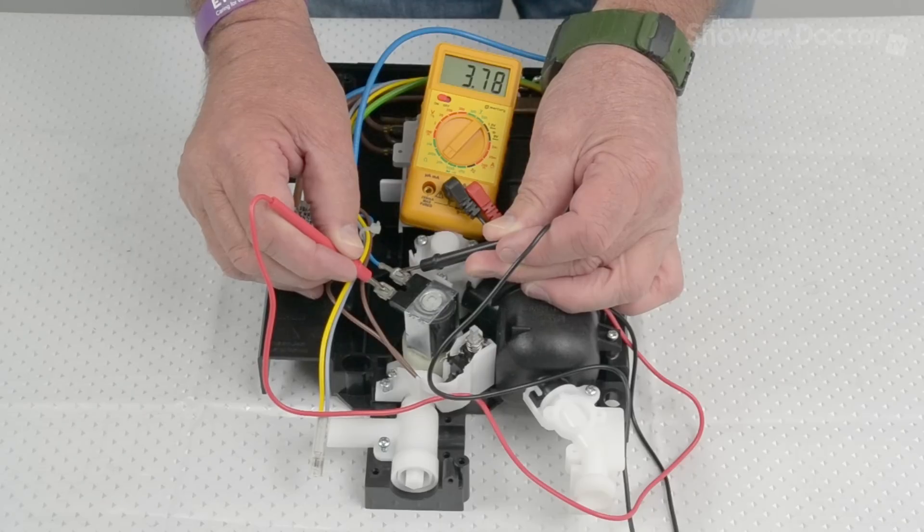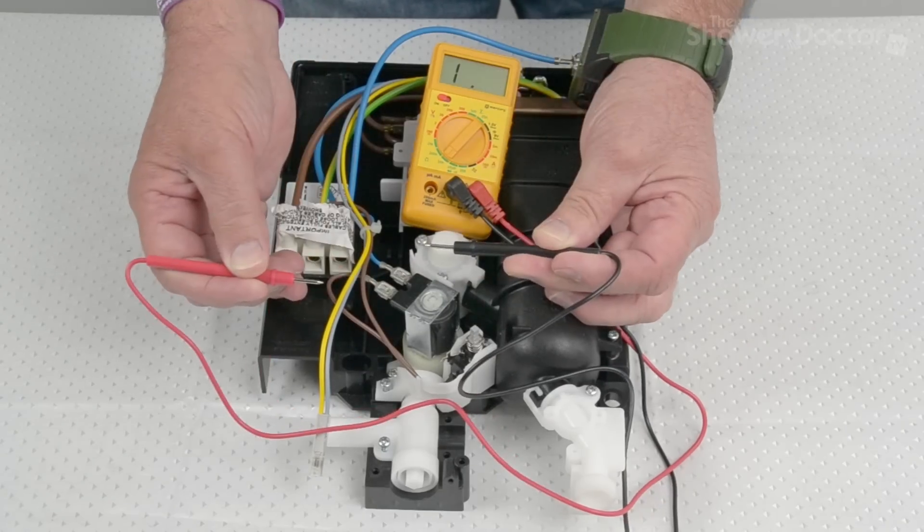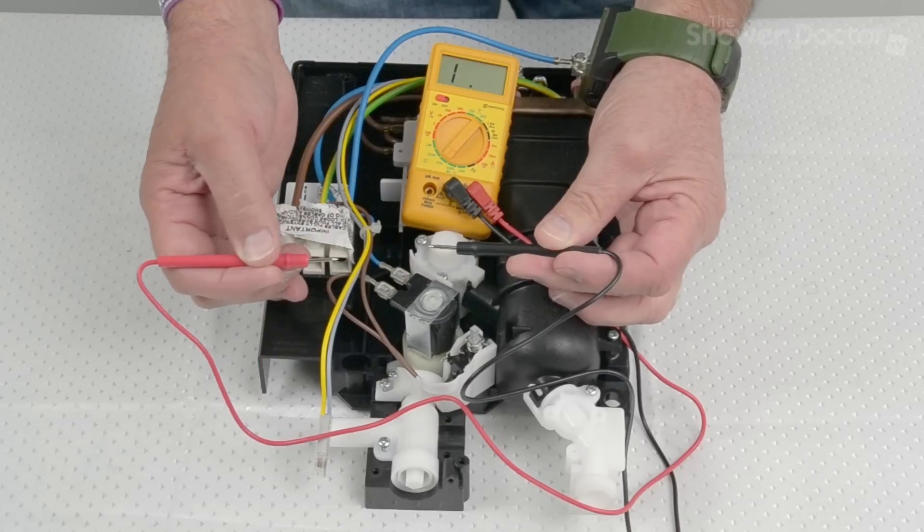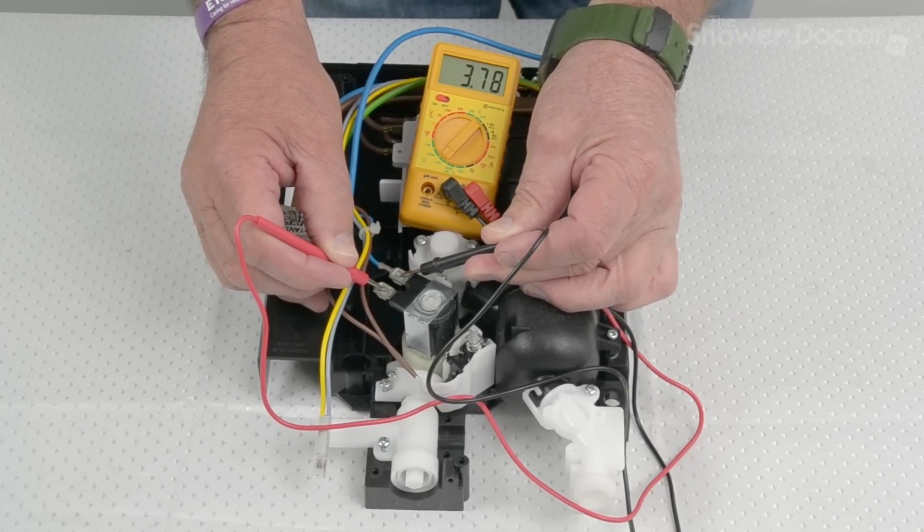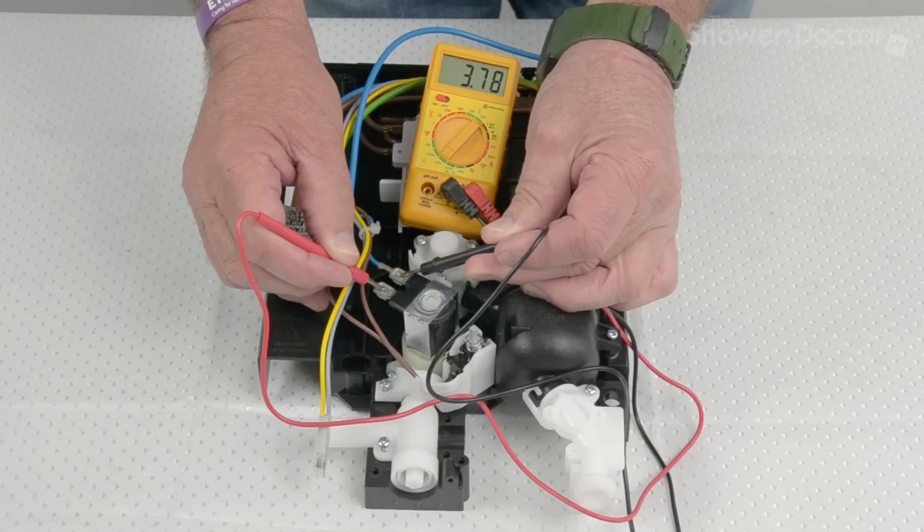Anything less than that, the solenoid is faulty. So often you'll get a zero reading on the solenoid if it's faulty. But normally anything less than 3.4 and the solenoid needs replaced.